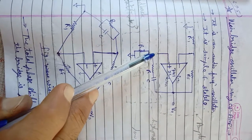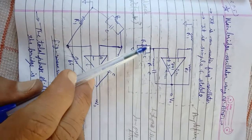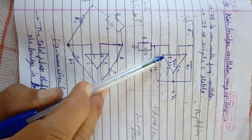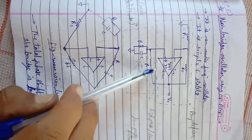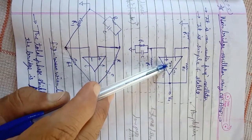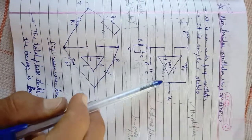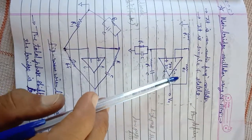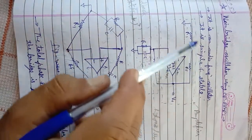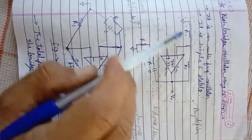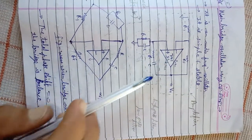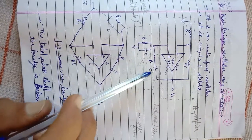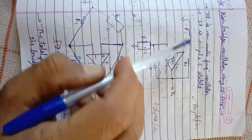Resonant frequency पर RC network का जो maximum signal होता है जो non-inverting terminal पर feed होता है, वह input का one-third होता है — Vf is one-third of input signal। तो signal को compensate करने के लिए gain तीन गुना होना चाहिए, इसलिए R1 और Rf combination द्वारा gain तीन set किया जाता है। दो तरीके से signal feed किये — non-inverting terminal पर जिसका काम oscillation का है, और inverting terminal पर जिसका काम gain को limit और set करना है। इस feedback/tank circuit को amplifier circuit से अलग दिखाया गया है।